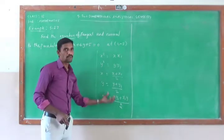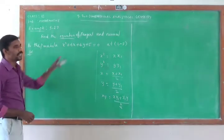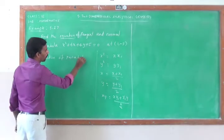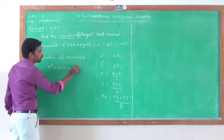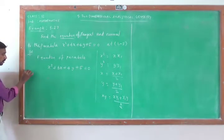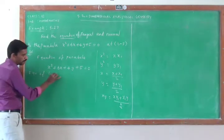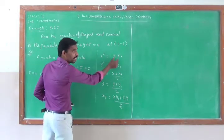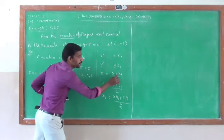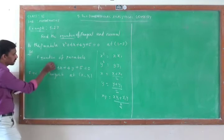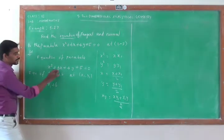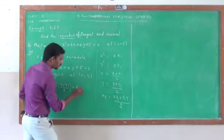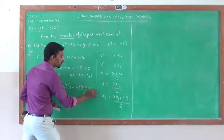Now I am going to teach this methodology. I am going to write the equation of the parabola first. The given parabola is x squared plus 6x plus 4y plus 5 equal to 0. For the equation of tangent at (x₁, y₁), x squared becomes xx₁, x becomes (x plus x₁) divided by 2, and y becomes (y plus y₁) divided by 2. So this gives: xx₁ plus 6 times (x plus x₁) divided by 2 plus 4 times (y plus y₁) divided by 2 plus 5 equal to 0.